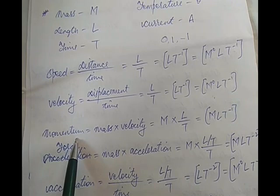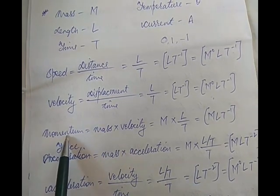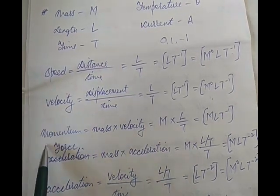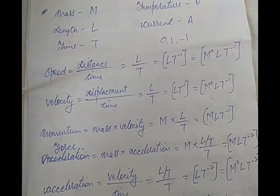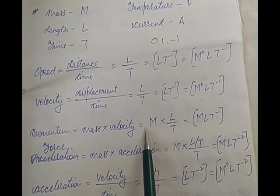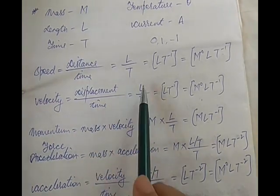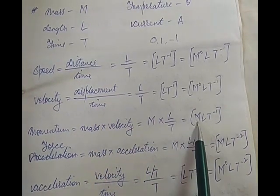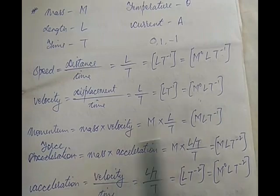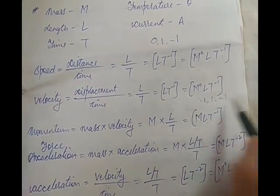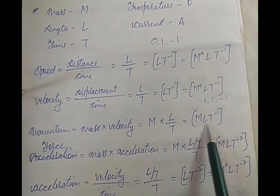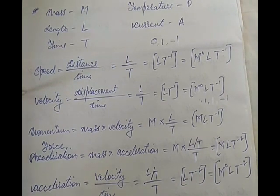Let us look at momentum. You need to know the formula — momentum is mass into velocity. If you do not know this, you cannot calculate the dimension. So momentum is mass into velocity: M for mass, and velocity is L upon T, so we write L upon T. This gives us MLT to the power minus 1 — this is the dimensional formula for momentum, and the dimension for momentum will be 1, 1, minus 1.